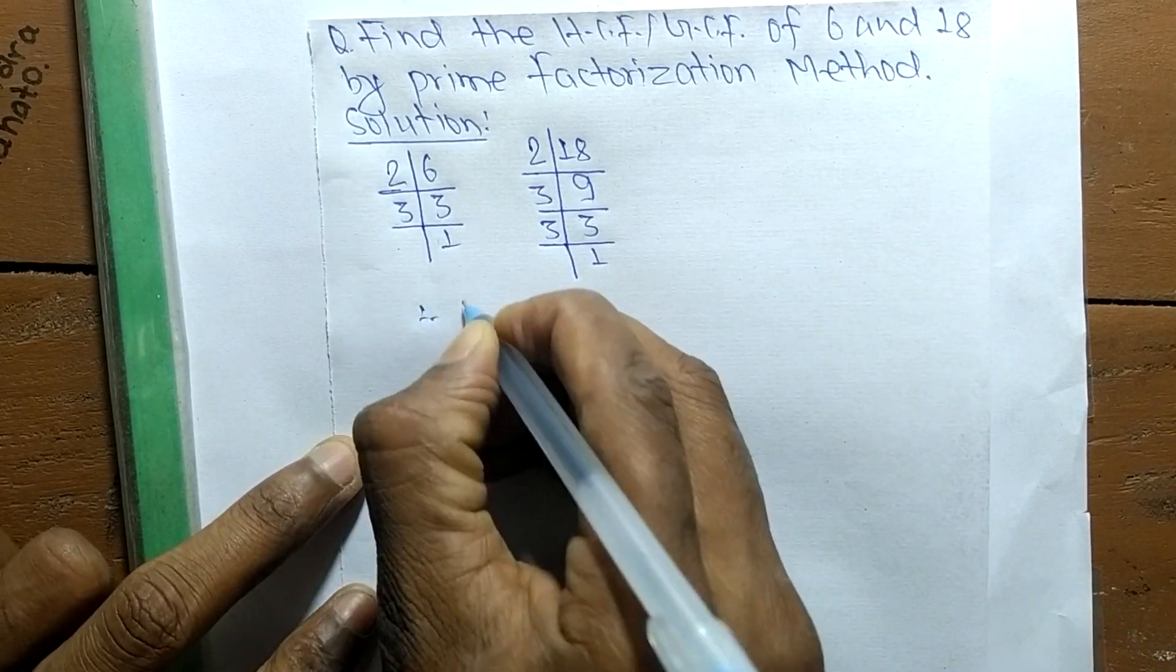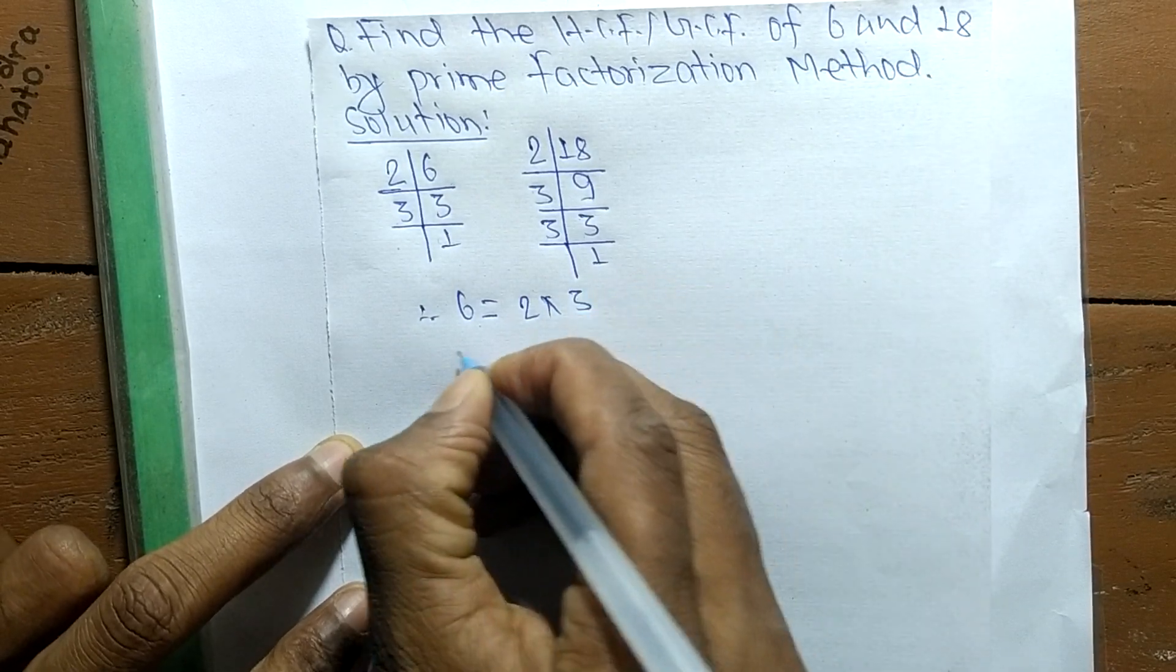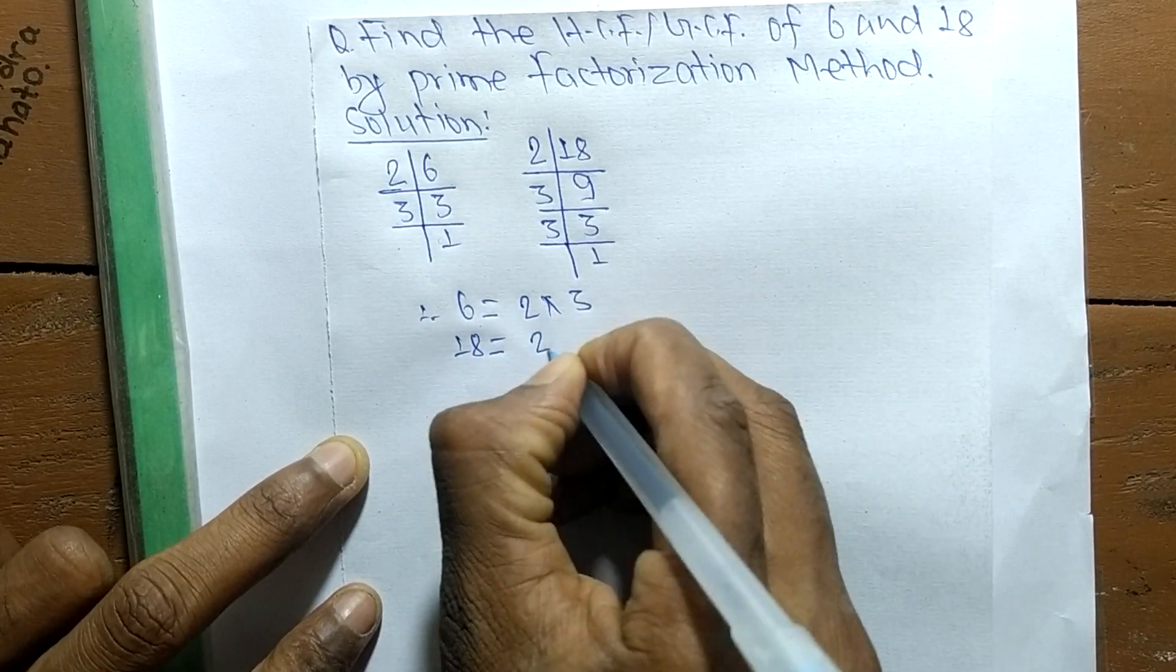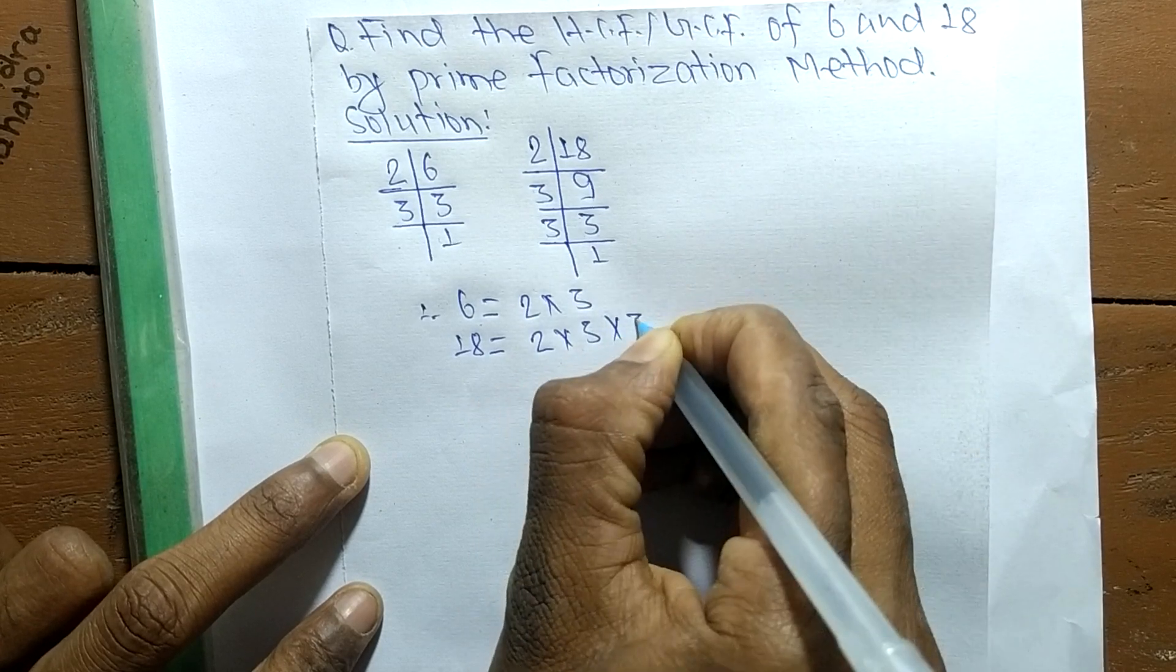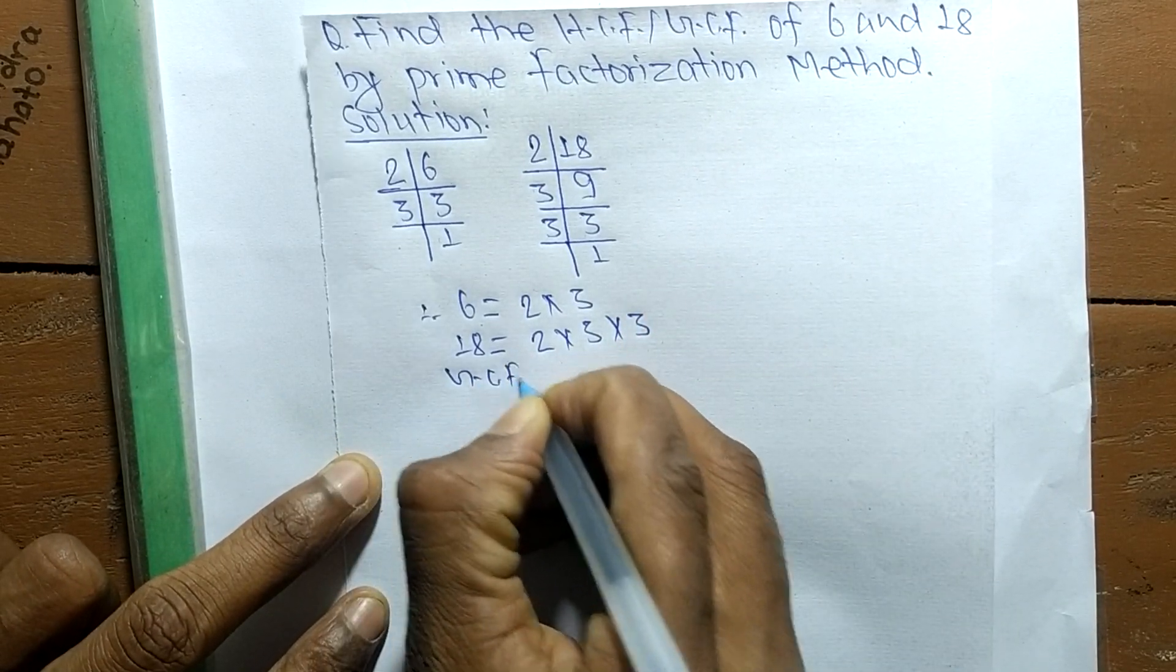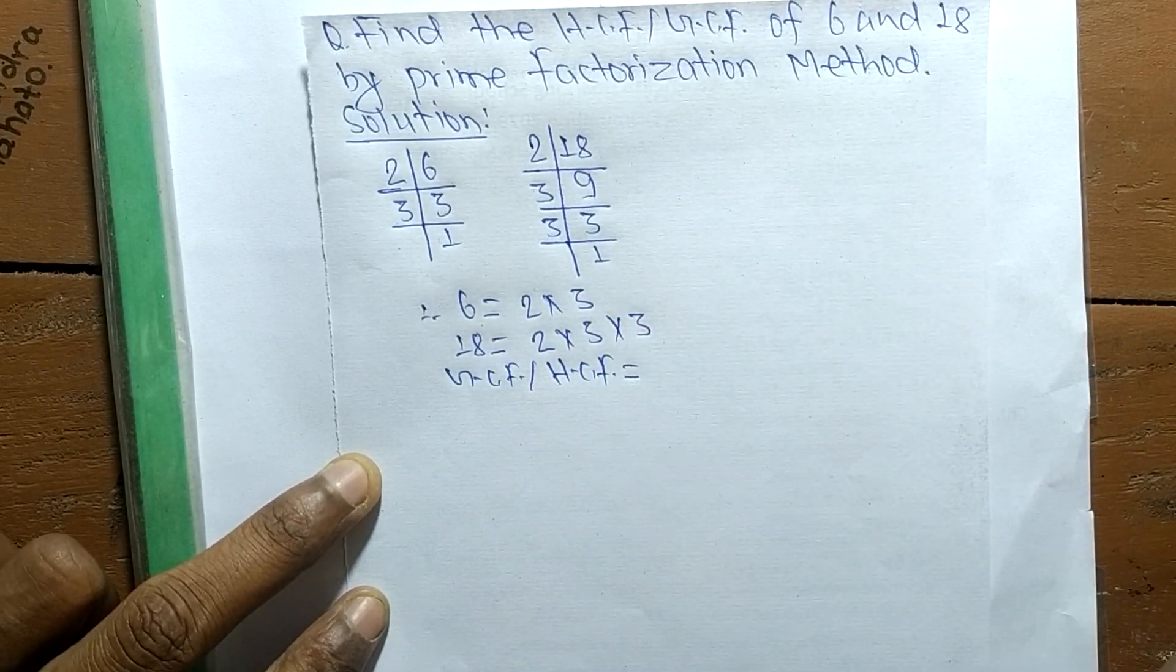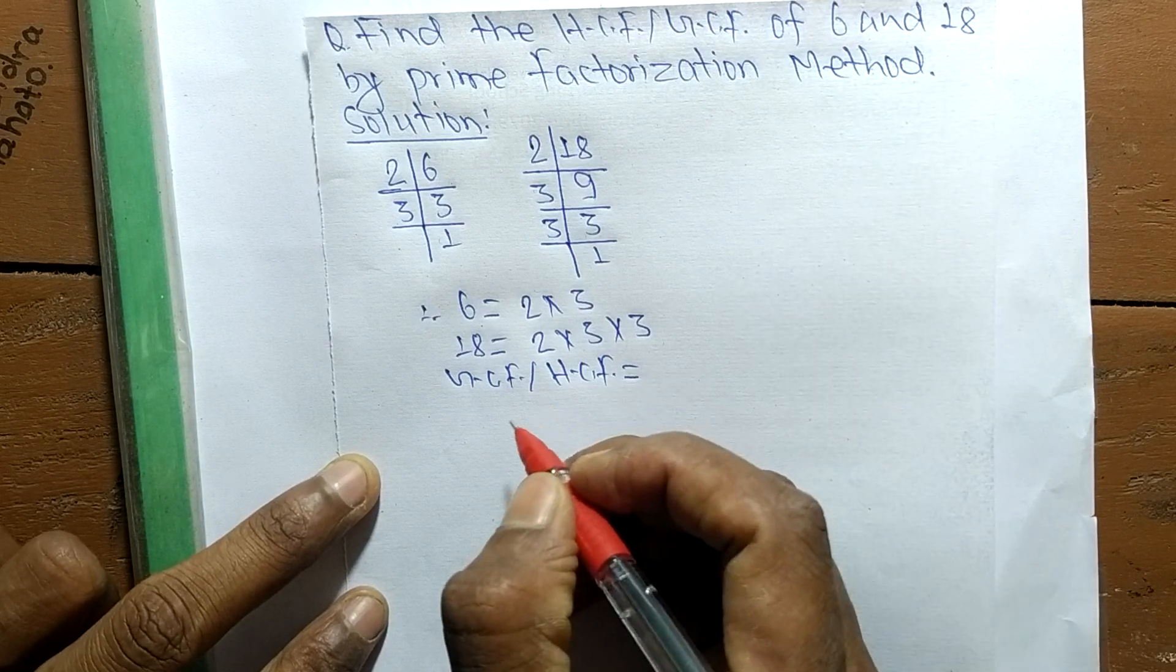So from these prime factors we can write 6 equals 2 times 3. Similarly, 18 equals 2 times 3 times 3. So the GCD or HCF is equal to... Now we have to select the common factors in all these prime factors.